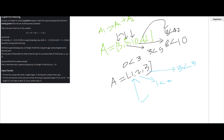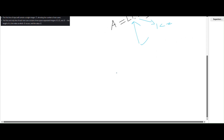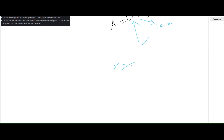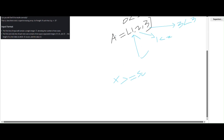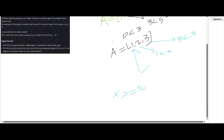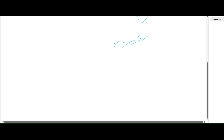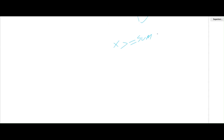The problem says the super increasing array should be of length n such that a[k] equals x. I am checking if x is greater than or equal to the sum of the first k minus one elements — that is, the sum of all previous elements from index 0 to k minus 1.